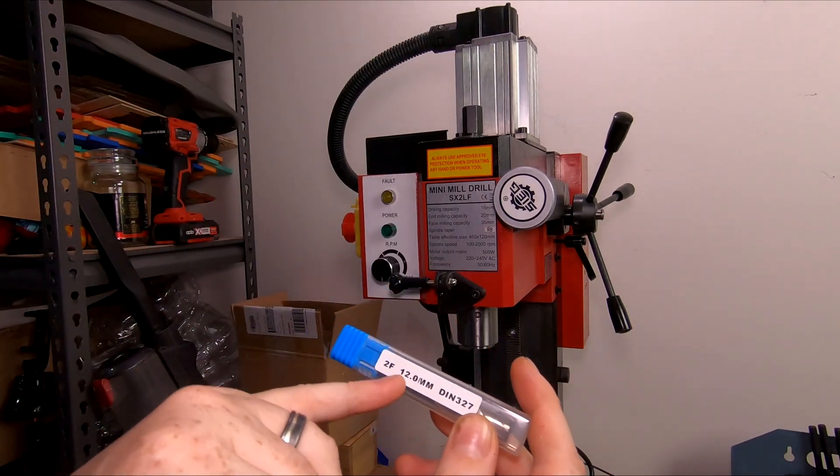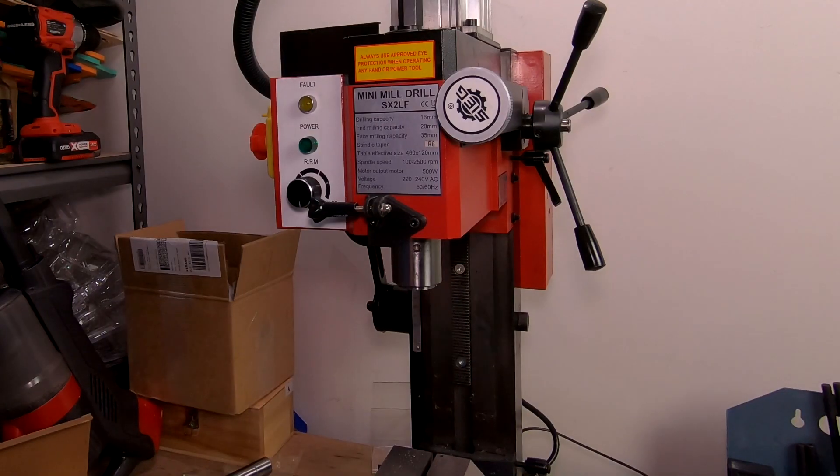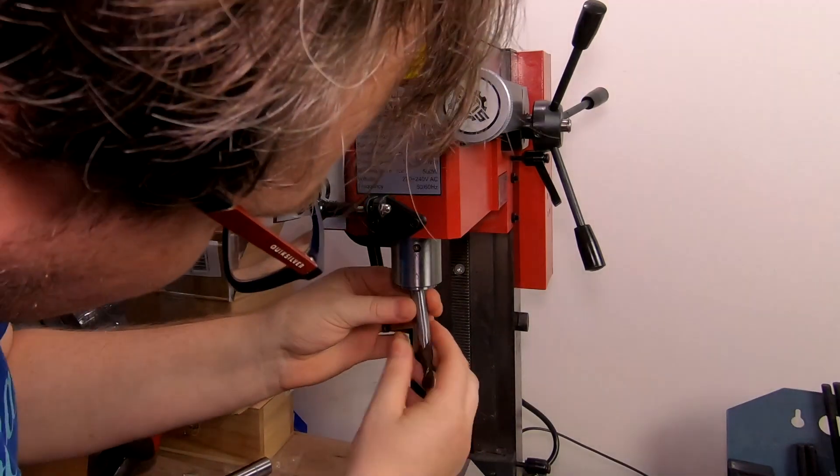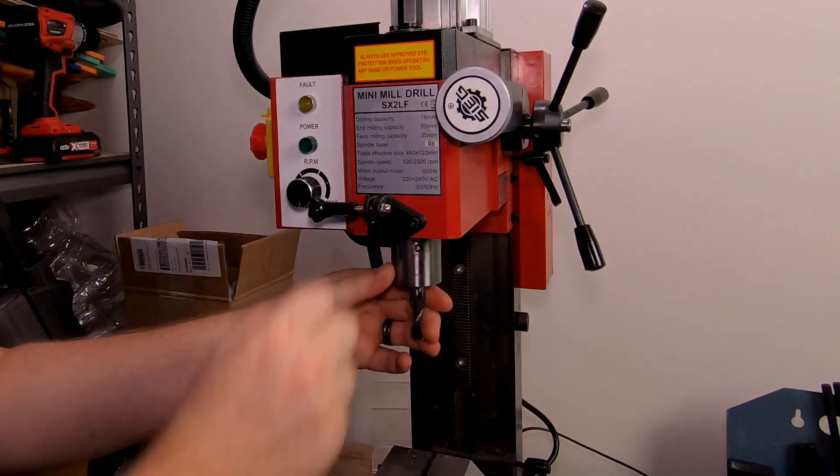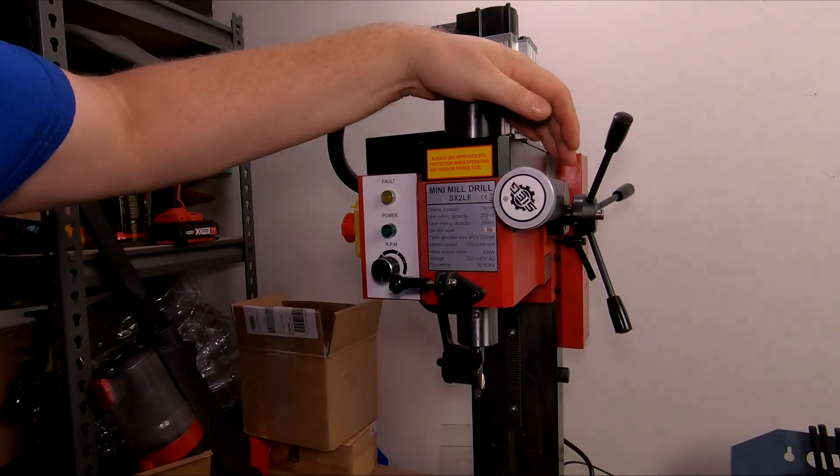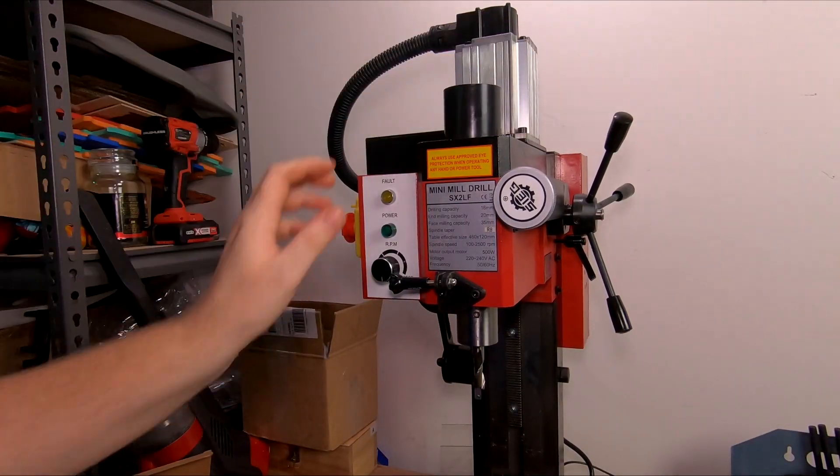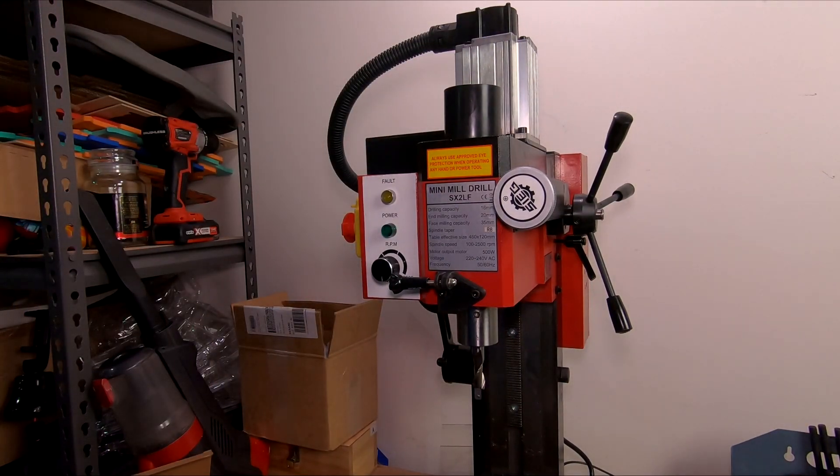Okay, so the bit we're putting in is just a two flute 12mm bit, just what comes in the kit. Slide it up in place, and tighten it back down. Put your dust cover back on. It's not a very nice fit, it sort of just sits there. And we're ready to load up some material.